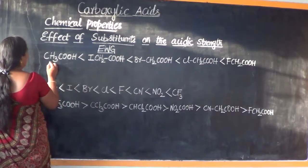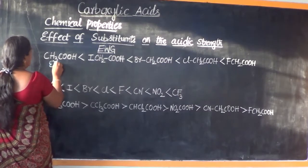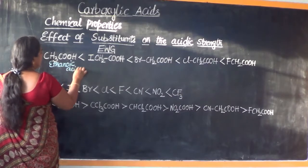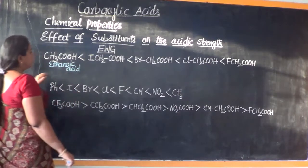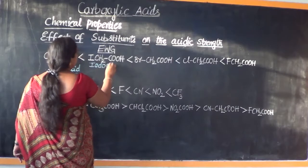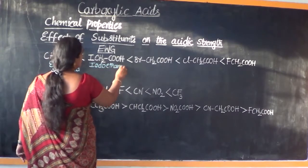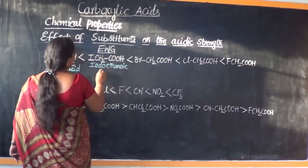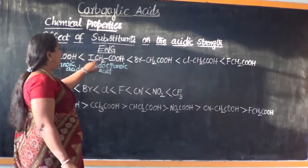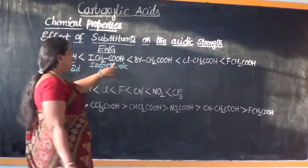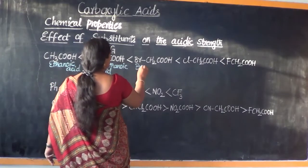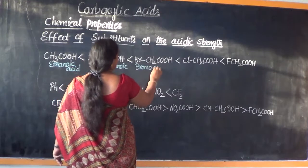CH3COOH — this is ethanoic acid, or acetic acid. Ethanoic acid or acetic acid is weakly acidic compared to iodoethanoic acid. The formula CH2ICOOH is called iodoacetic acid, and it is less acidic than bromoacetic acid.